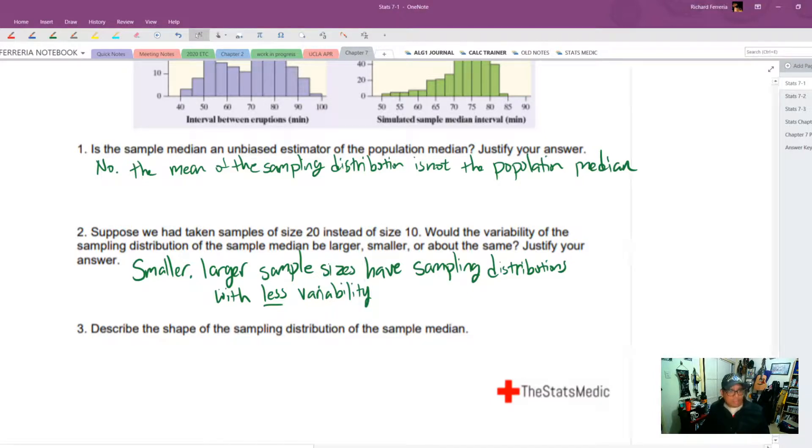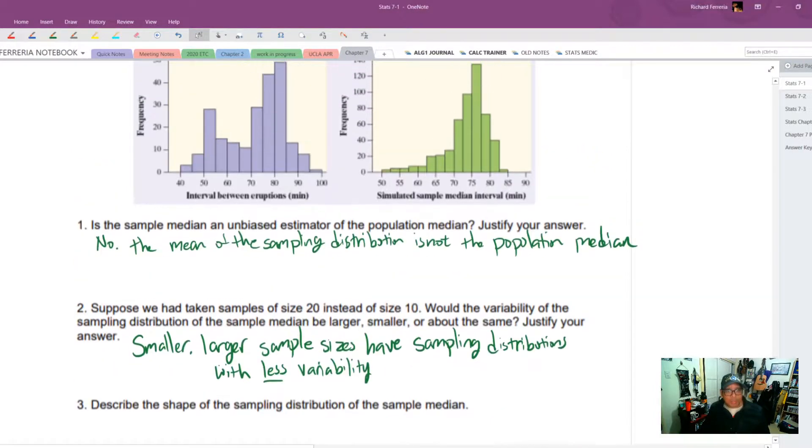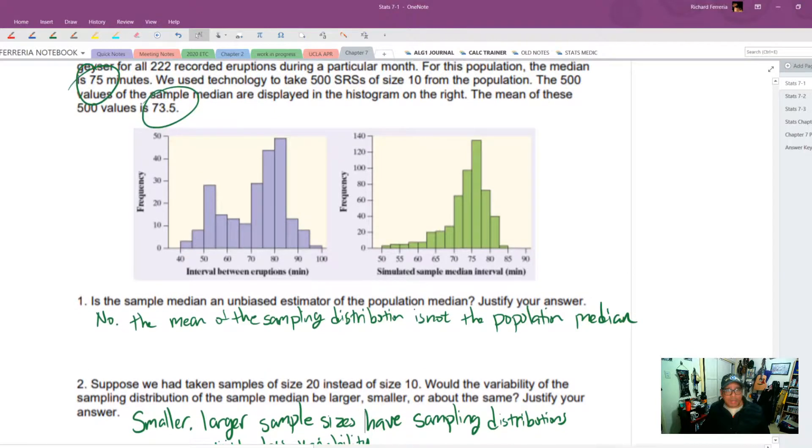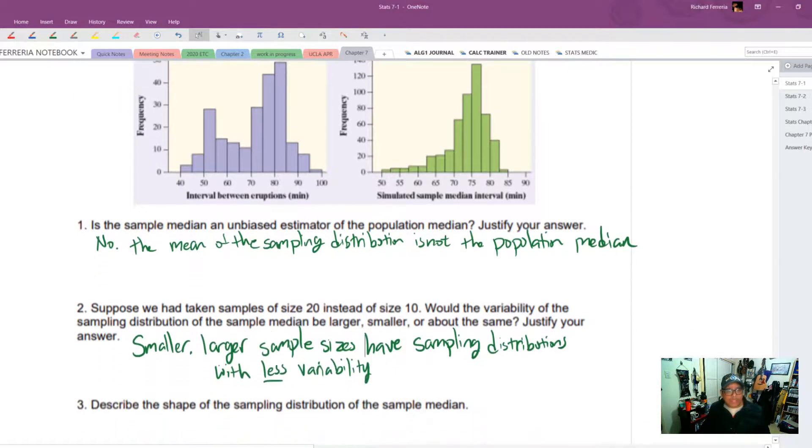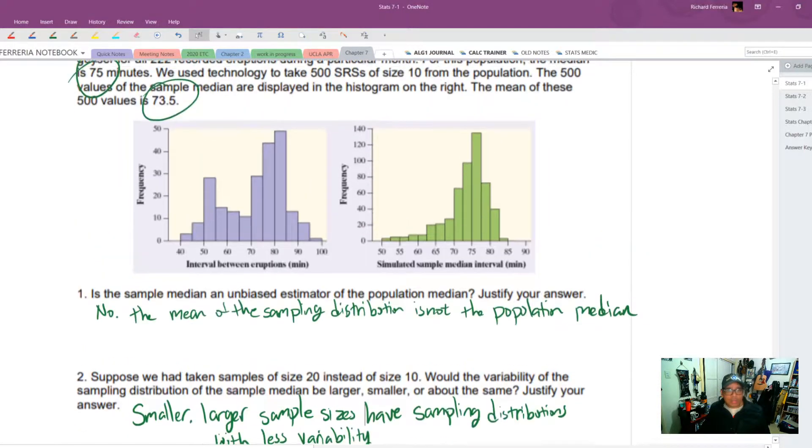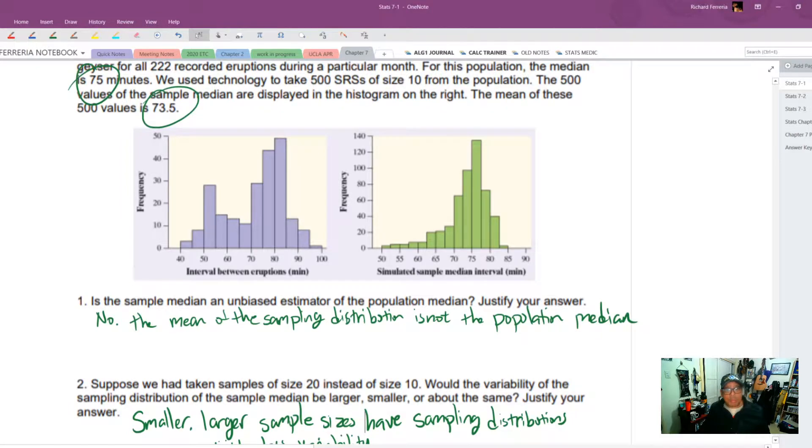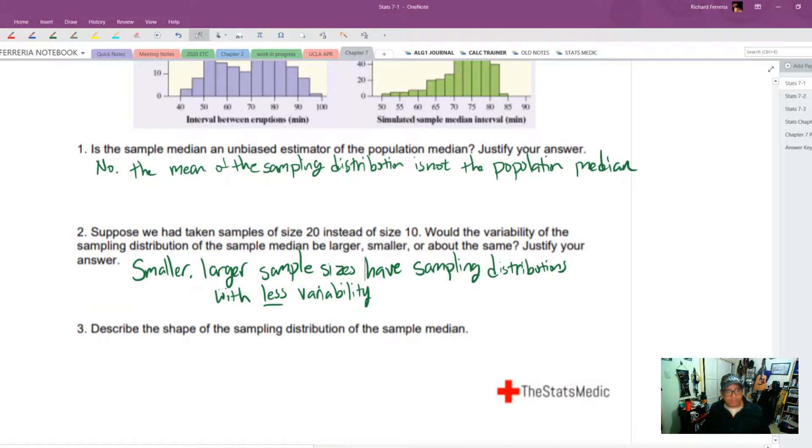And finally, describe the shape of the sampling distribution of the sample median. Well, the shape definitely looks single peaked, but right skewed. I mean left skewed. So the shape is single peak and left skewed.